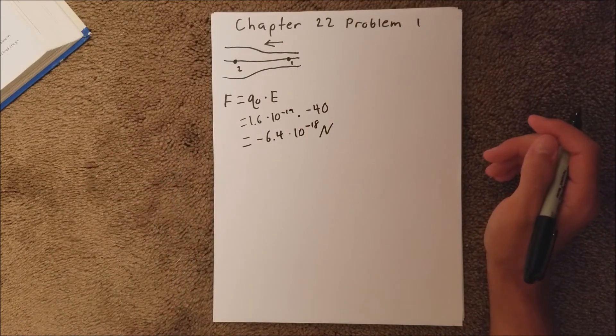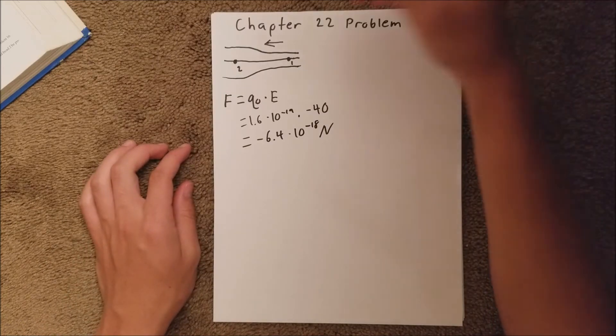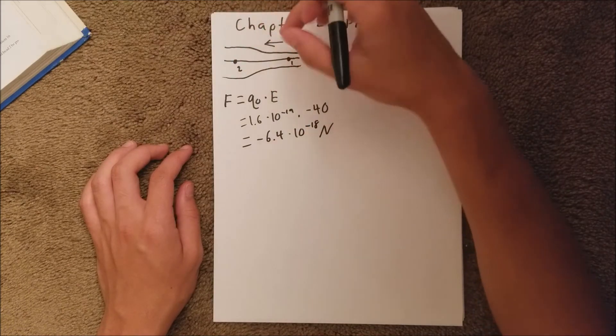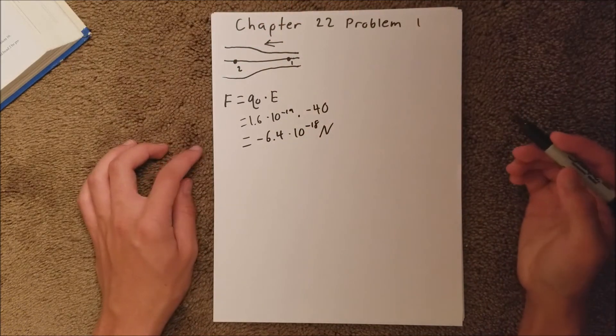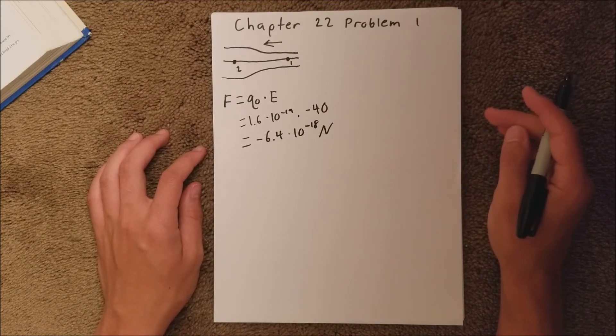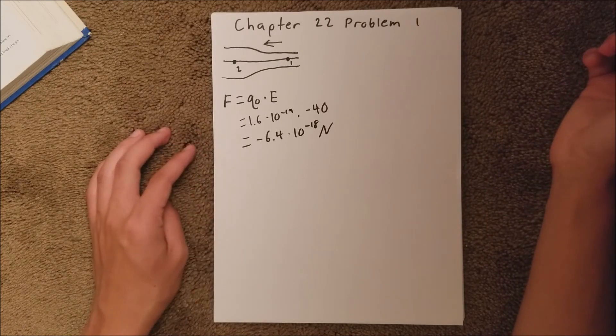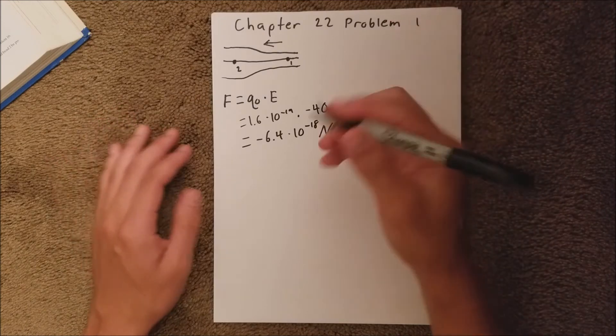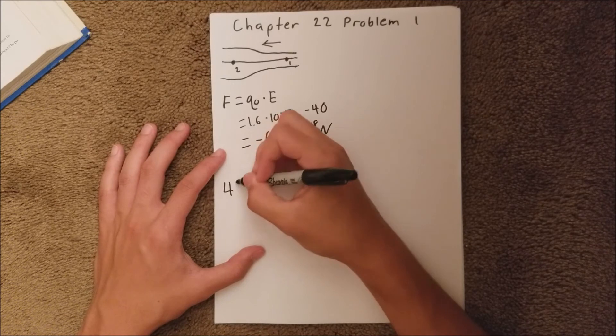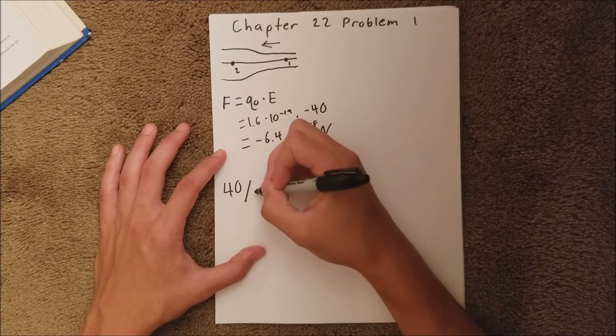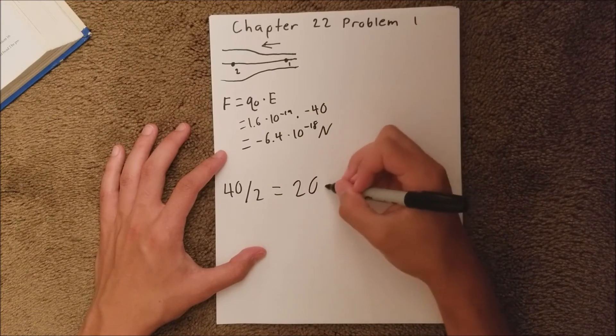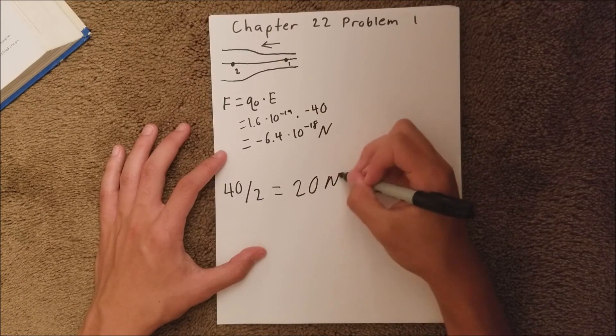We are told in the problem that the space between the field lines at point 2 is twice as much as at point 1. That means the field is going to be half as strong. We are also asked for the magnitude, so it's always going to be positive. We know that at point 1 it's 40. So if we divide that by 2, at point 2 it's going to be 20 newtons per coulomb.